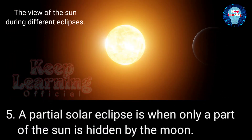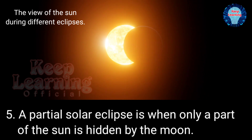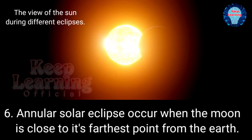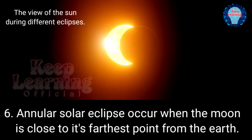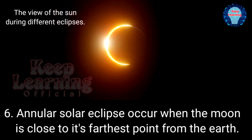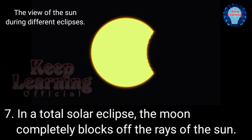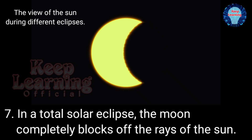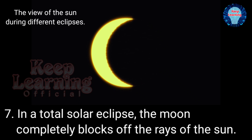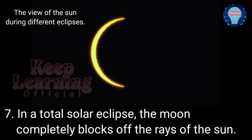A partial solar eclipse is when only a part of the sun is hidden by the moon. An annular solar eclipse occurs when the moon is close to its farthest point from the earth. In a total solar eclipse, the moon completely blocks off the rays of the sun.